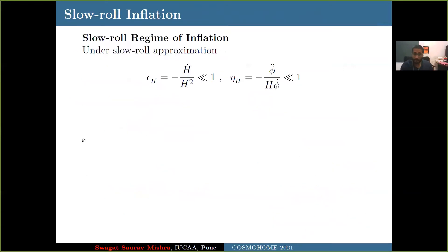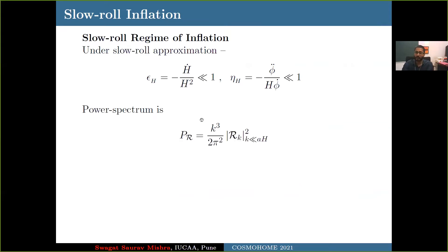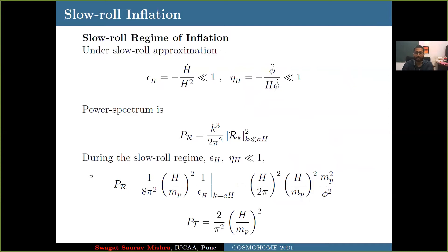In the standard slow roll approximation, we have the first slow roll parameter and the second slow roll parameter, both to be smaller than one. In the standard slow roll regime, the power spectrum of scalar fluctuations — defined as k² divided by 2π² times the co-moving curvature perturbation Fourier mode squared — takes a very simple form: 1 over π² times Hubble squared over Planck mass squared, divided by the first slow roll parameter epsilon. Similarly, the tensor fluctuations have a similar formula which only depends on Hubble and not on the first slow roll parameter.